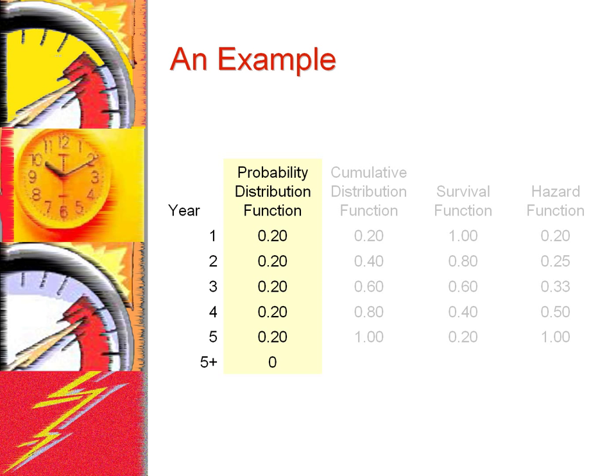Obviously this is an over-simplification, as a prosthesis is more likely to fail in later years. But for the sake of the current example, let's accept this simplification. In real situations, the yearly probabilities can be estimated and used instead of equal yearly probabilities.